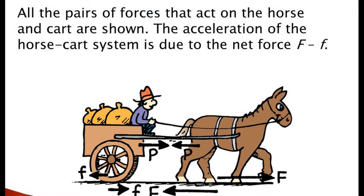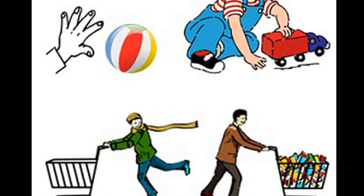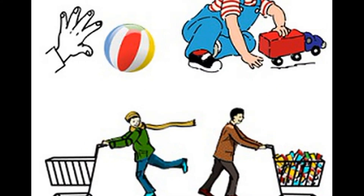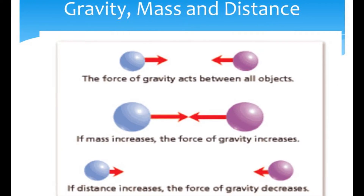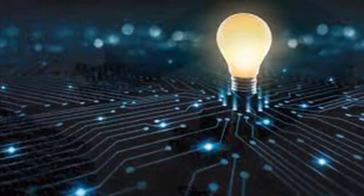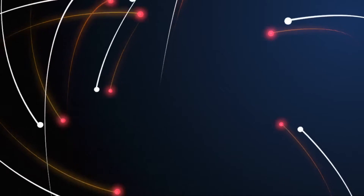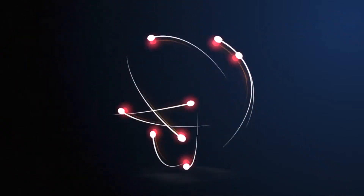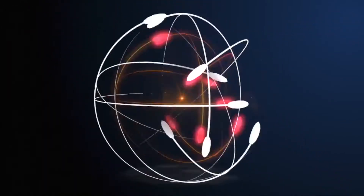Force at a distance: Forces which do not involve physical contact between two objects but act through the space between them are called action at a distance force. Forces like gravity, magnetism and electricity act without contact among objects. A few important types of force are discussed here.